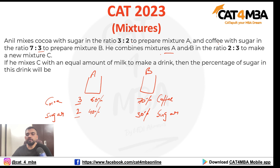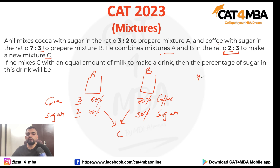He combines Mixtures A and B in the ratio 2 to 3 to make a new Mixture C. Now let's find the concentration of sugar in C. The concentration of sugar in A is 40%, in B is 30%, and the volume ratio in which these are mixed is 2 to 3.